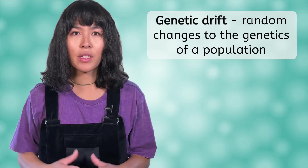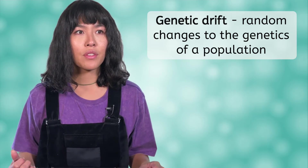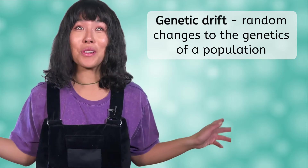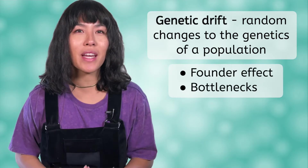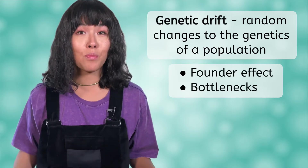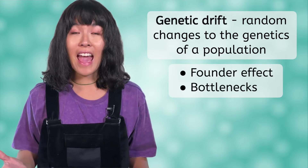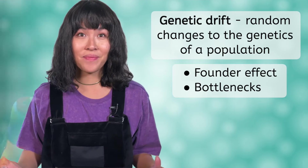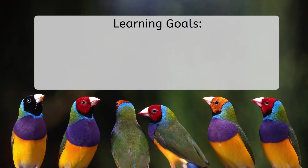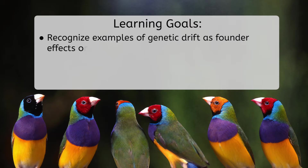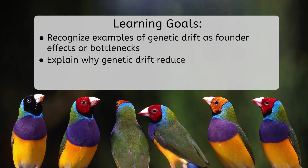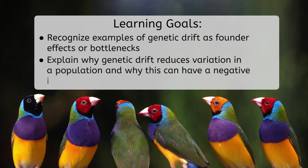It's a little like when you let your thoughts drift — you're probably just thinking of something totally random. There are two main types of genetic drift that we'll explore: founder effects and bottlenecks. By the end of this lesson, you'll be able to recognize examples of genetic drift as founder effects or bottlenecks, explain why genetic drift reduces variation in a population, and why this can have a negative impact on the population.